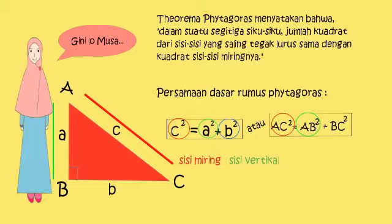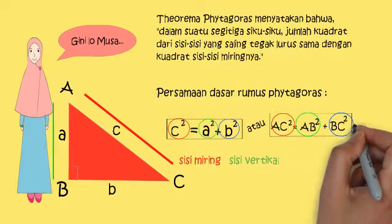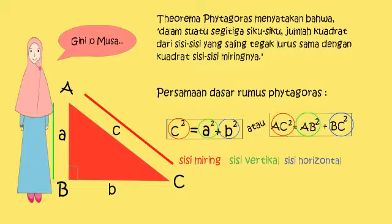B kuadrat dan BC kuadrat merupakan sisi horisontal dari segitiga. Perhatikan garis berwarna biru. Garis ini menunjukkan sisi horisontal dari segitiga.